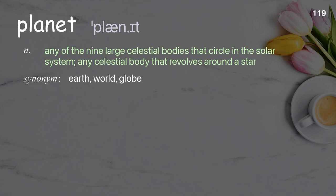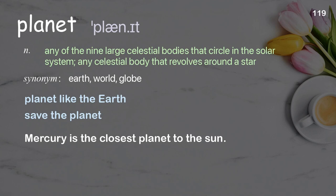Planet: any of the nine large celestial bodies that circle in the solar system; any celestial body that revolves around a star. Examples: planet like the Earth; save the planet. Mercury is the closest planet to the sun.